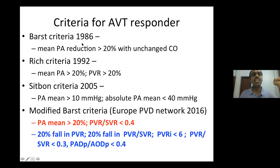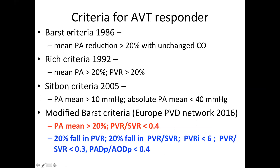Robin Bost criteria way back in 1986 declared that a positive acute vasodilator test response means mean PA pressure reduced by 20% from baseline without any change in cardiac output. Then came the Rich criteria in 1992 — mean PA should reduce by more than 20% and PVR should also reduce by 20%. Sidbon criteria in 2005 gave a definition of PA mean absolute value reducing by 10 mmHg and absolute PA mean pressure falling below 40 mmHg. Until this time it was primarily used for idiopathic pulmonary arterial hypertension mostly in adults.